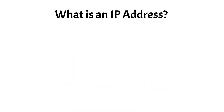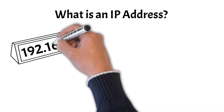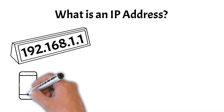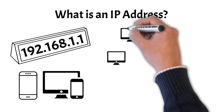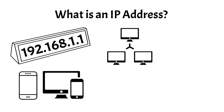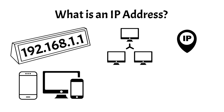We should first clarify what an IP address is. An IP address, or Internet Protocol address, is a unique numerical label assigned to each device connected to a computer network that uses the Internet Protocol for communication. It serves two main functions: identifying the host or network interface, and providing the location of the host in the network.